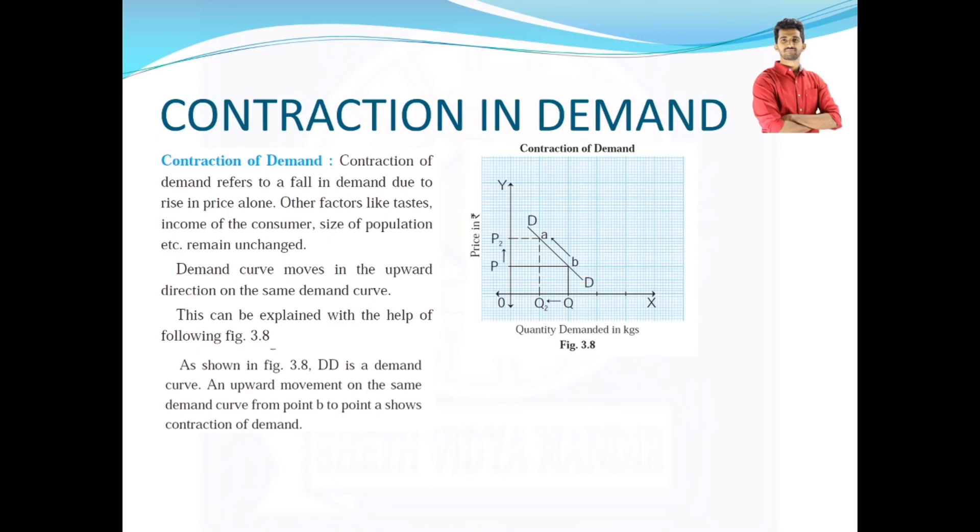In the previous one, we saw that price was falling. Here, the price is increasing and because of increase in price, quantity demanded reduces.